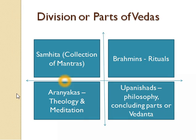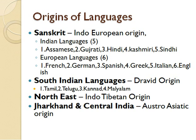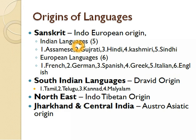The next topic is the origin of languages. Languages come from different families. For example, Sanskrit is from the Indo-European family. There are five Indian languages that originated from the Indo-European family: Assamese, Gujarati, Hindi, Kashmiri, and Sindhi.